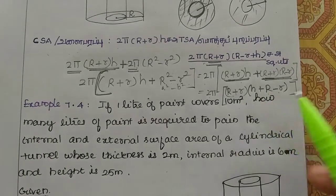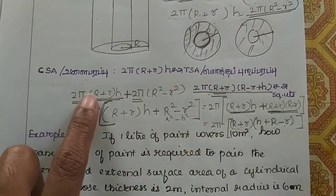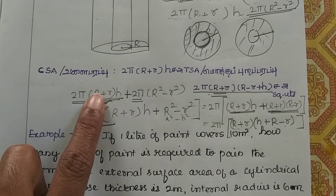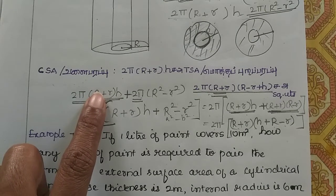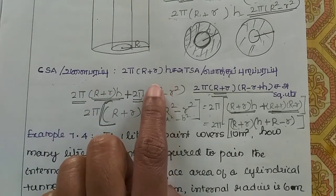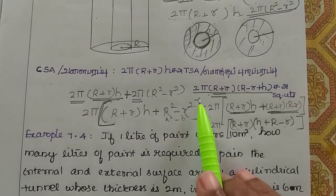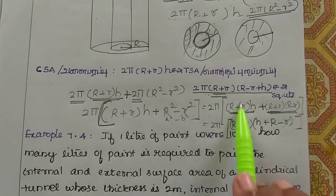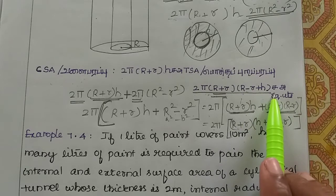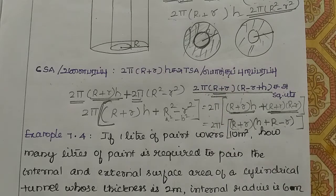So to summarize: we painted the curved surface area of the hollow cylinder — that gives 2π(R + r)h. The total surface area formula is 2π(R + r)(R − r + h). This formula is important to memorize. Previous and next video links are in the description box. Thank you.